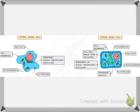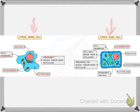The animal cell is shown on the left and the plant cell on the right. The animal cell is labelled with nucleus, ribosomes, cytoplasm, mitochondria, and cell membrane. The plant cell additionally includes chloroplast, permanent vacuole, ribosomes on rough endoplasmic reticulum, and a cell wall made from cellulose.